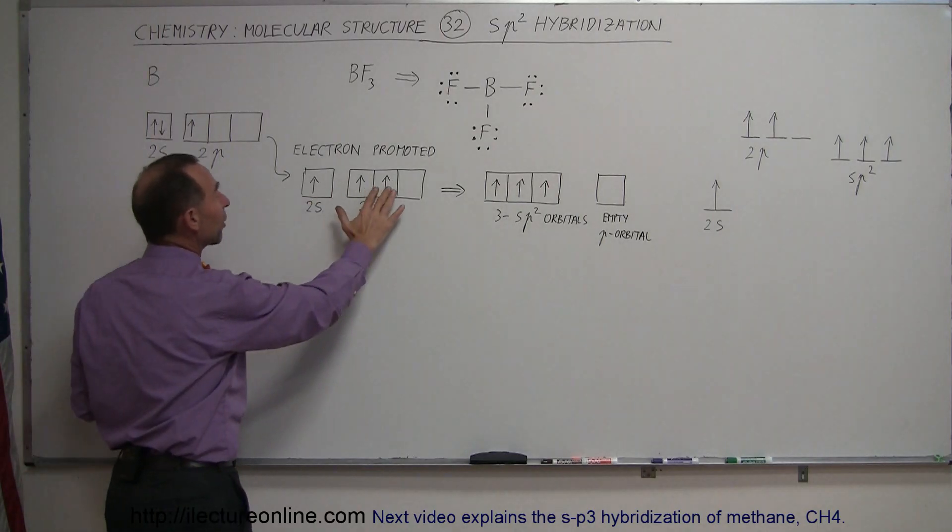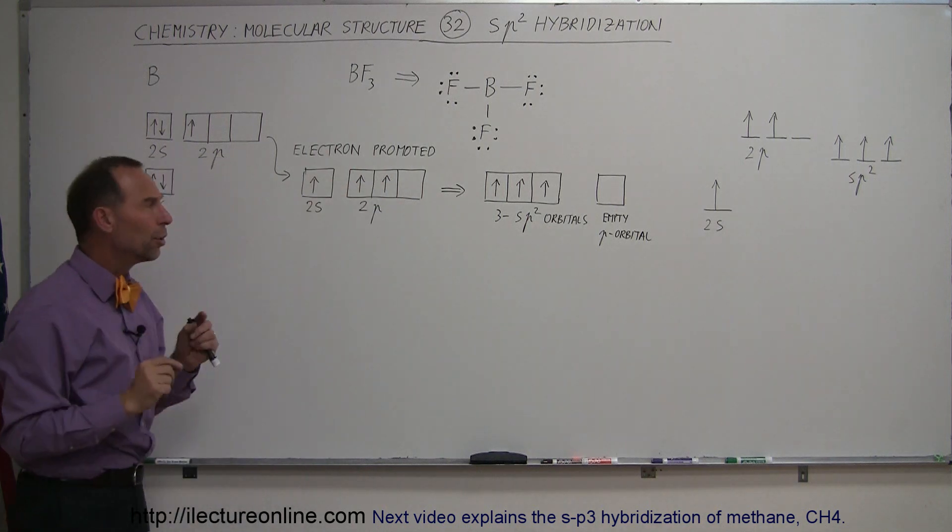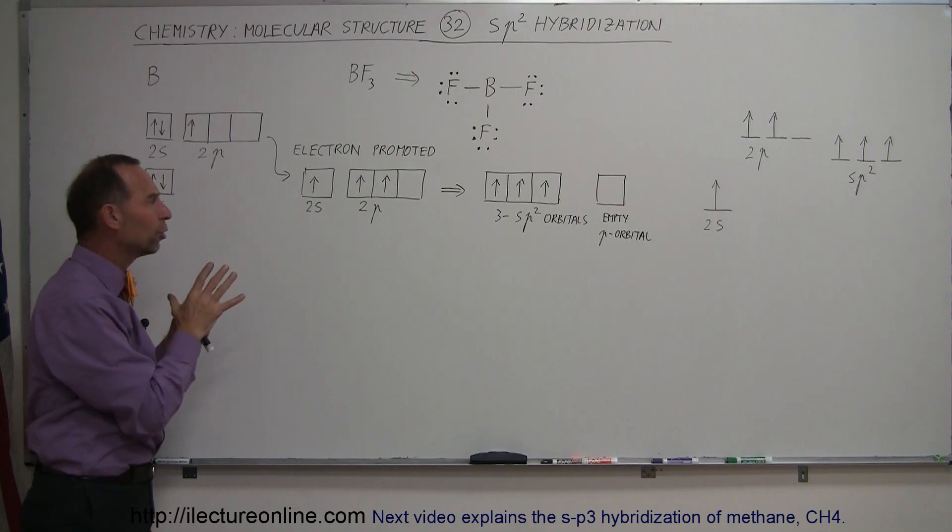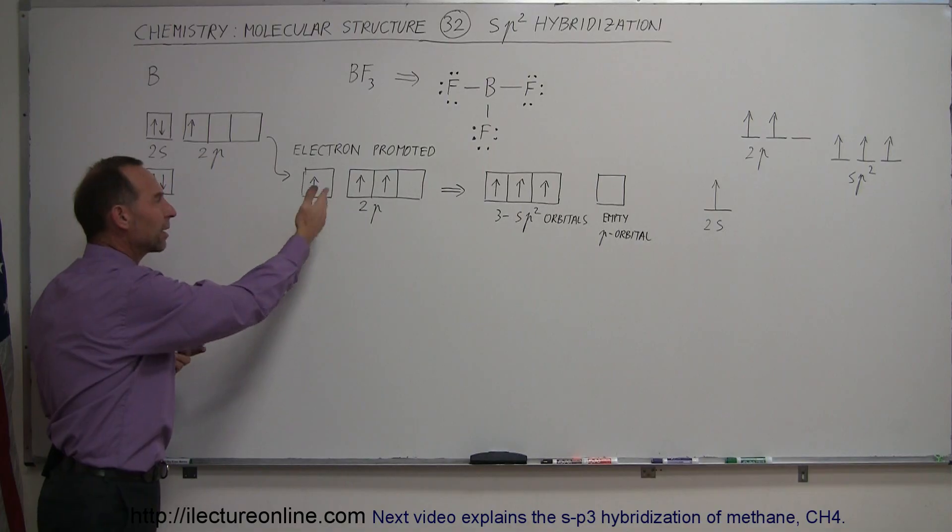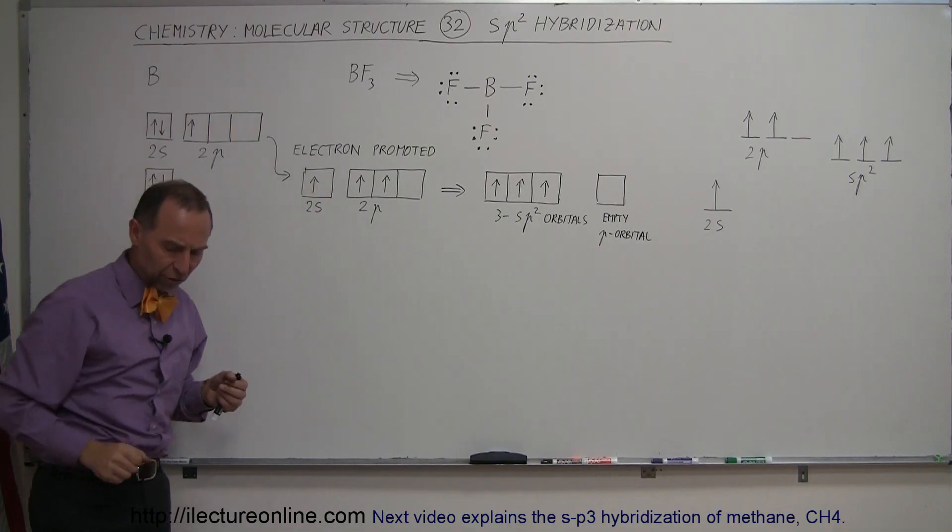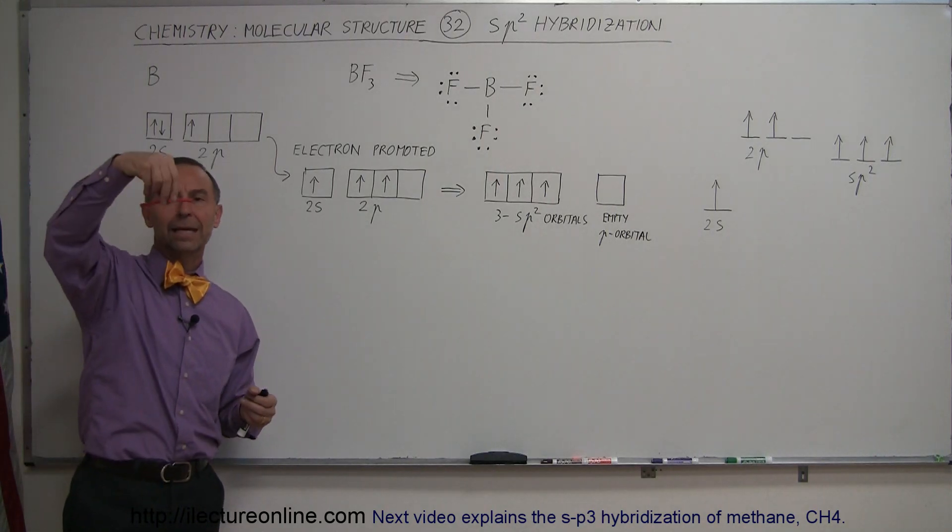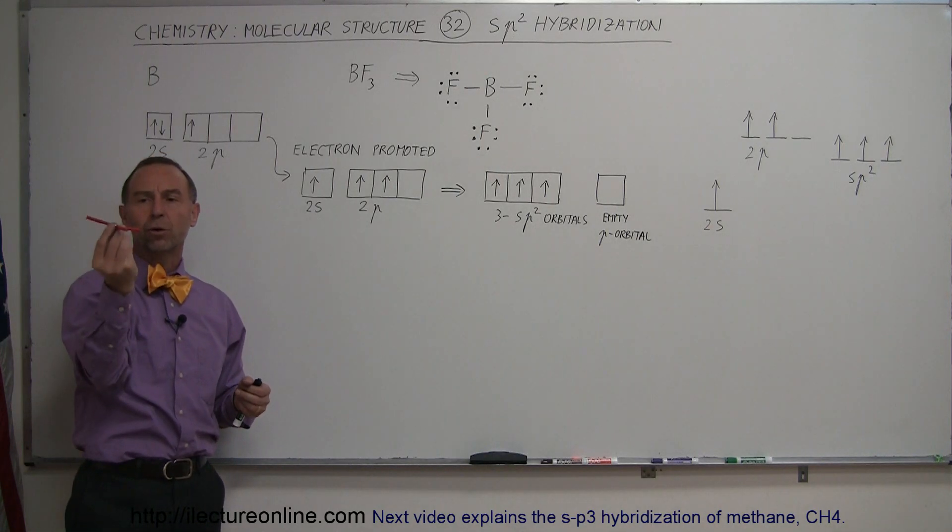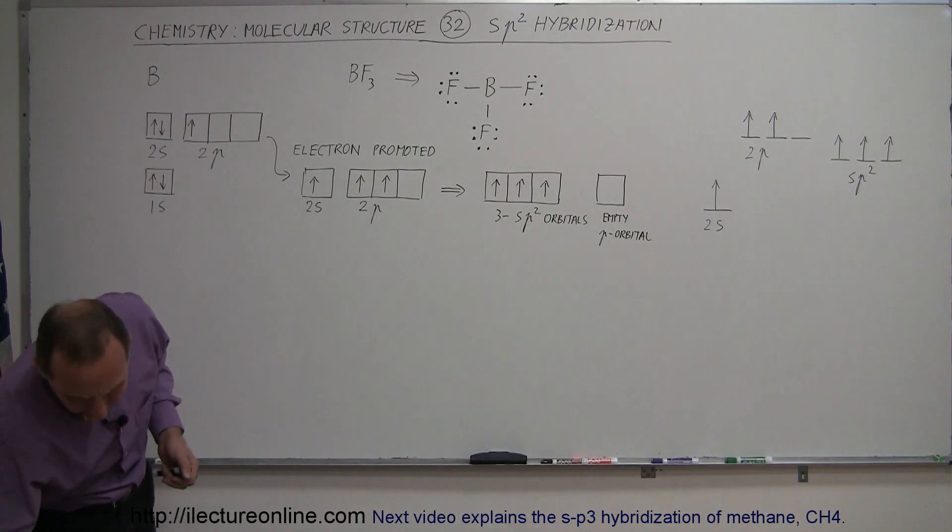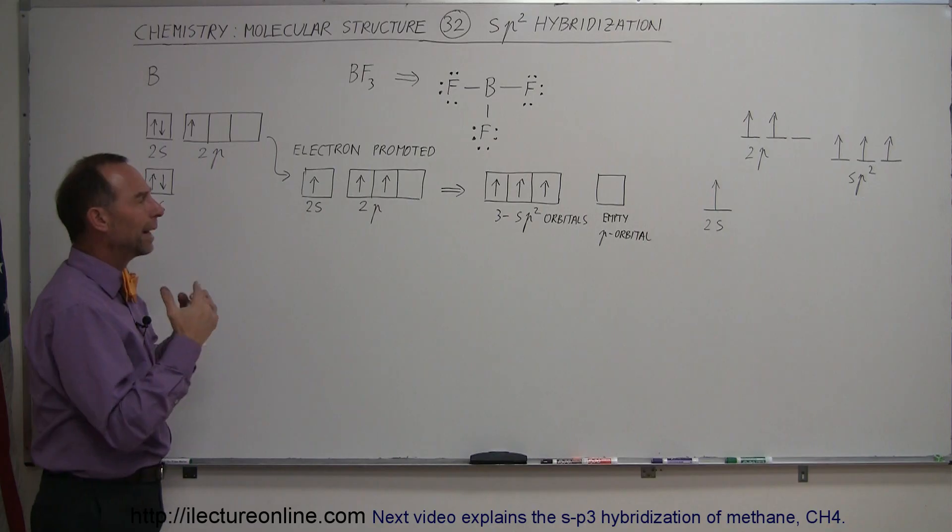That requires some energy, but now we have three electrons in three different orbitals able to make bonds. But we know that when they make bonds, the molecule will look trigonal planar. And so we couldn't really accomplish that when we have an electron in an S orbital and two electrons in two p orbitals. We know the molecule will look something like that in a planar state. It will be trigonal planar, as we call it. And we have to find a way to make that happen.